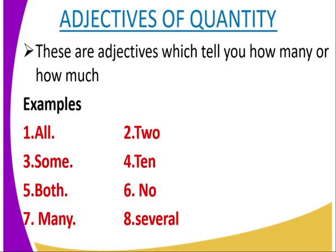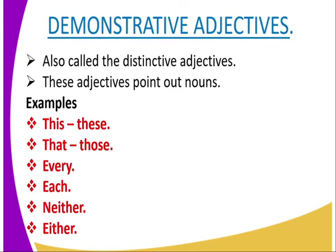Demonstrative adjectives are used to point out nouns — they demonstrate, hence the name. They are also called distinctive adjectives. Examples include 'this' in singular form and 'these' in plural form, and 'that' in singular form and 'those' in plural form. Words like 'every,' 'each,' 'neither,' and 'either' are also used as demonstrative adjectives.